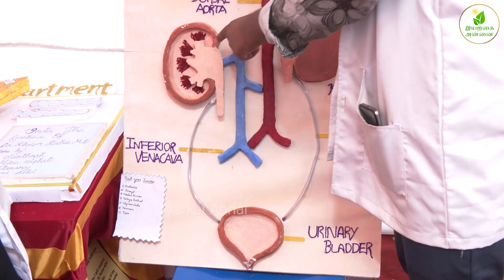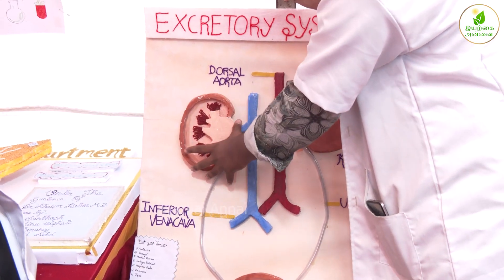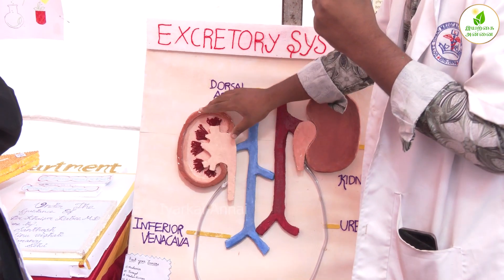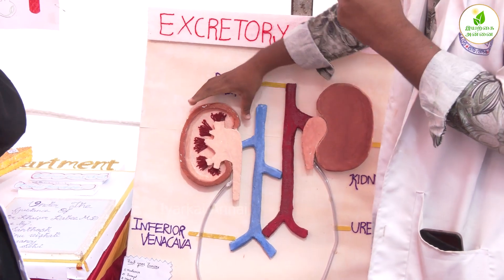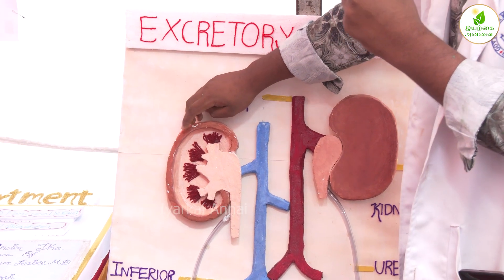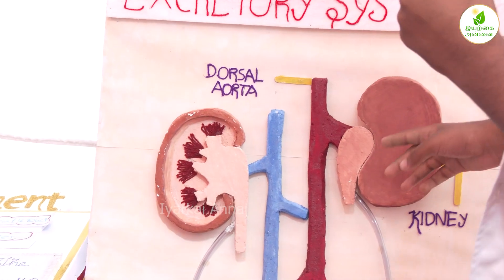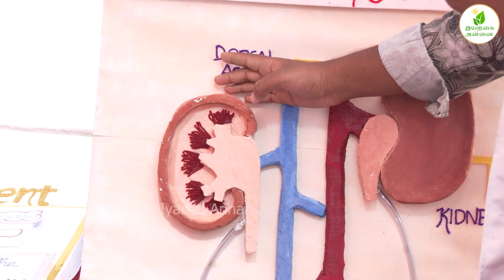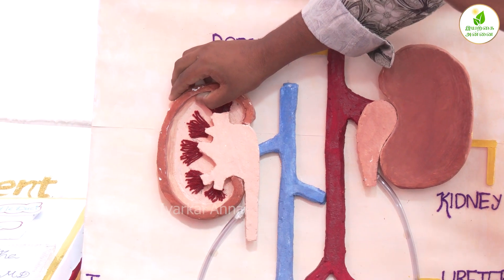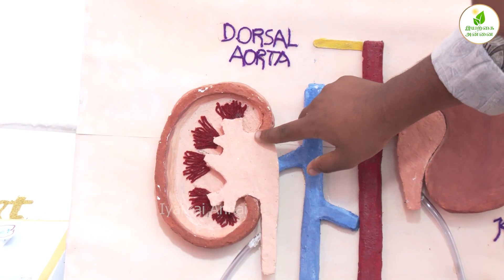We have one pair of kidneys, one pair of ureters, and the urinary bladder and urethra. The kidney is reddish brown and bean shaped. The length is 15 cm, the width is 5 cm, and the thickness is 2 cm. If you look at the layers, the outer layer is the cortex and the inner layer is the medulla. This region is the hilum.